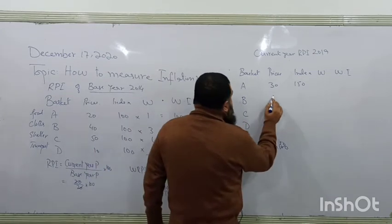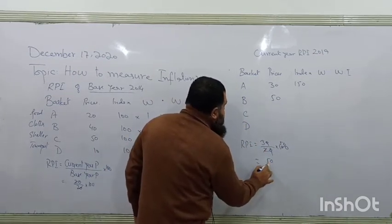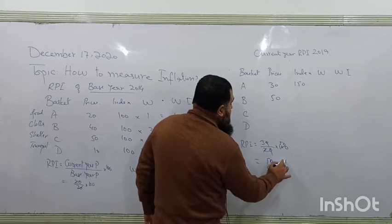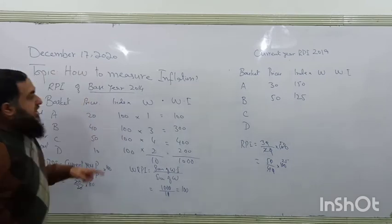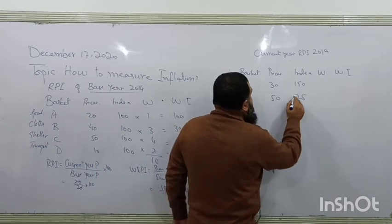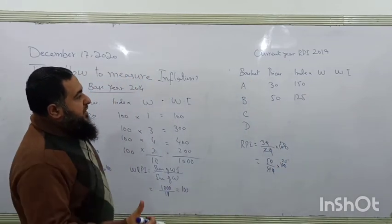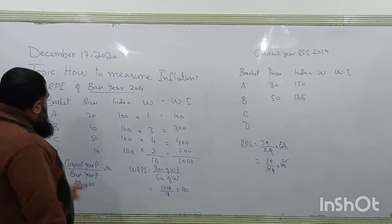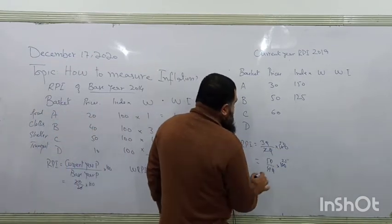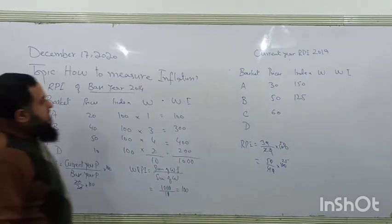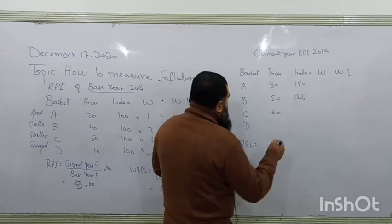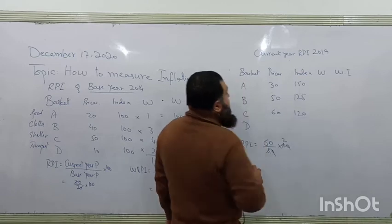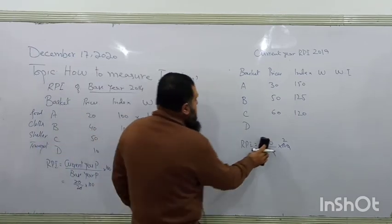Clothing prices have moved from $40 to $50. The index = (50 ÷ 40) × 100 = 125, so clothing prices have increased by 25%. For shelter, prices have risen from $50 to $60. The index = (60 ÷ 50) × 100 = 120, a 20% increase.